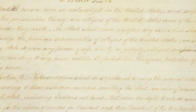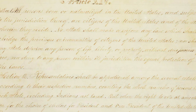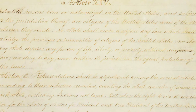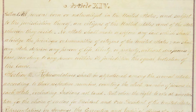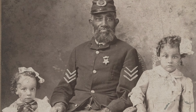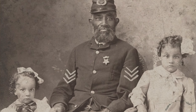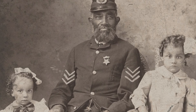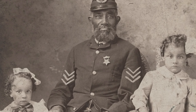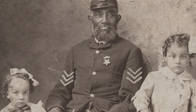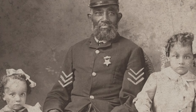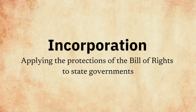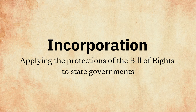The 14th Amendment recognized African Americans as citizens of the United States and the states where they lived. The amendment was passed to stop state governments from unfairly discriminating against African Americans. The 14th Amendment also prohibited states from making or enforcing laws that abridge the privileges or immunities of citizens or denied due process or equal protection of the laws.